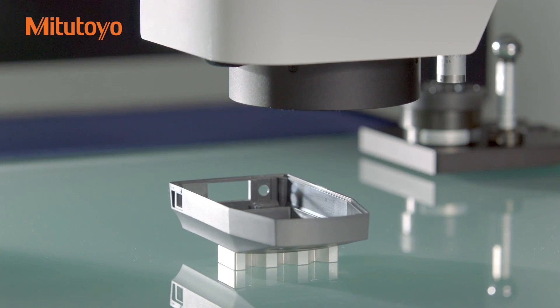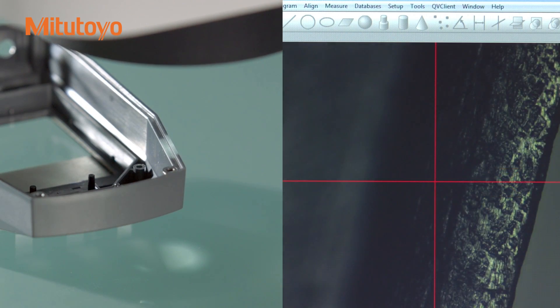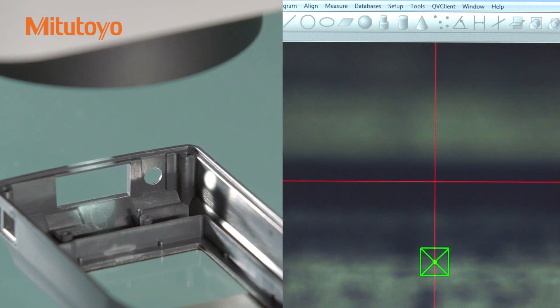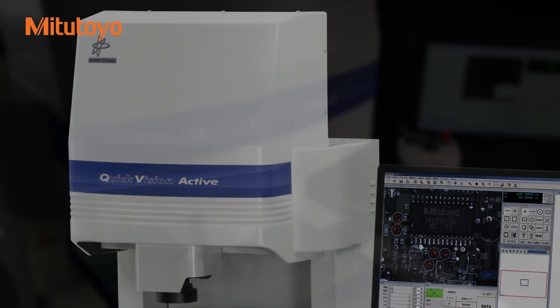High-speed autofocusing enables leveling on the plane of the workpiece, verifying the height of a feature, or simply placing the camera at the proper focus position. QV Active comes in two stage sizes.